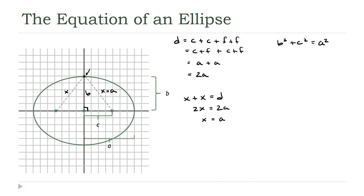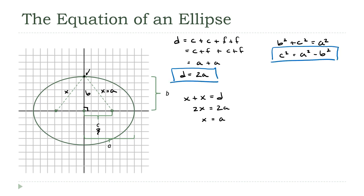I'm going to rewrite that as C squared equals A squared minus B squared. The final equation will have A and B in it, giving us the semi-major and semi-minor axes directly. If you want to know the location of the focal points — the value of C — you'll use that equation. So our two key equations are: D equals 2A, and C squared equals A squared minus B squared. Hold on to both of those because we'll need them to derive our formula.